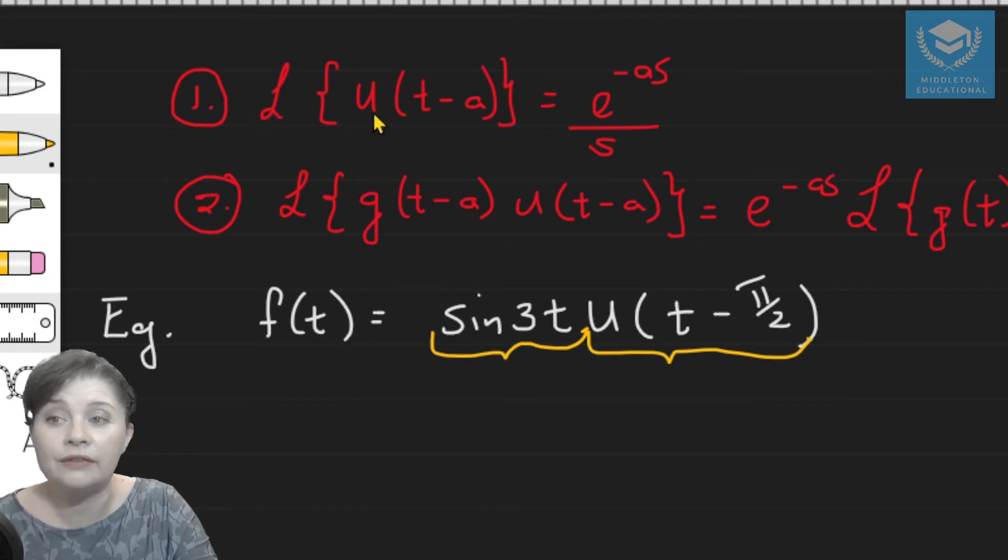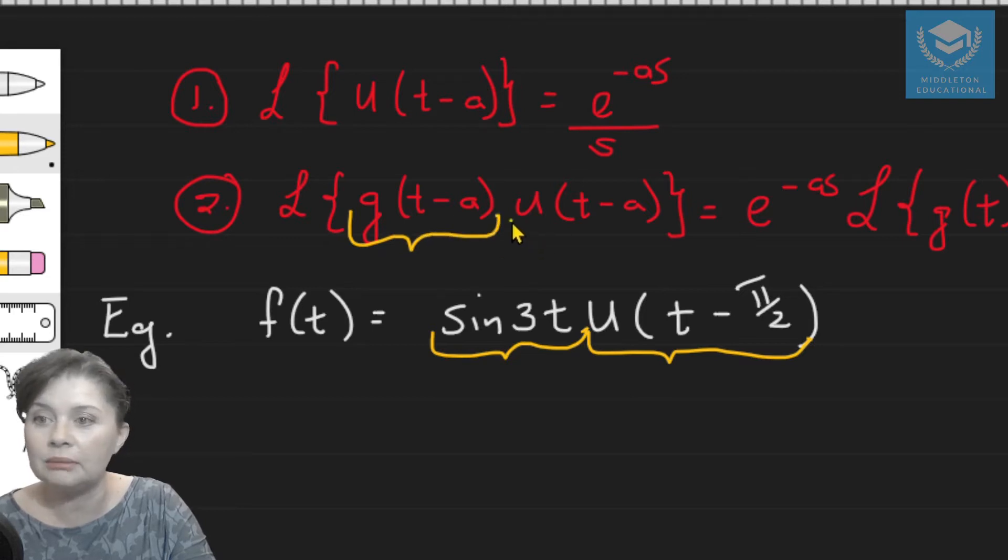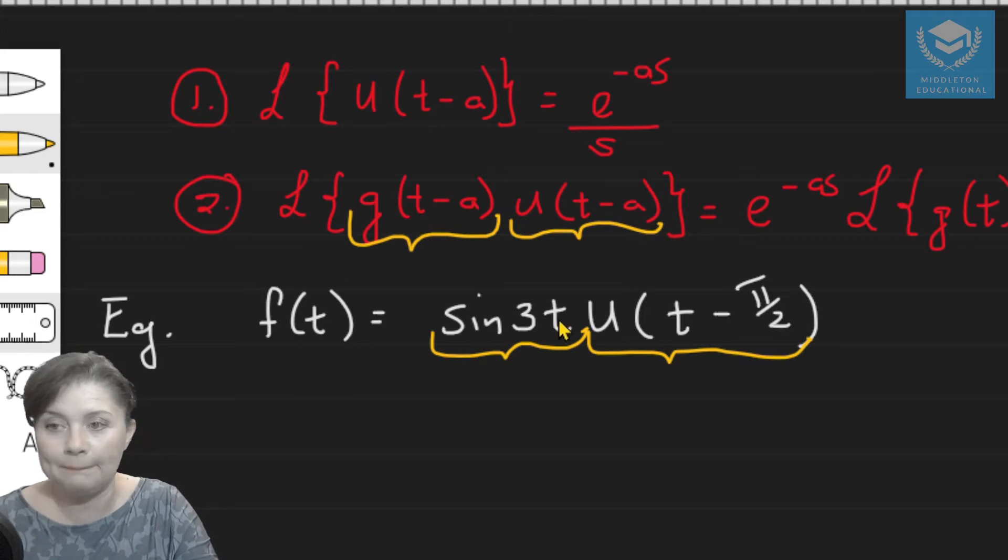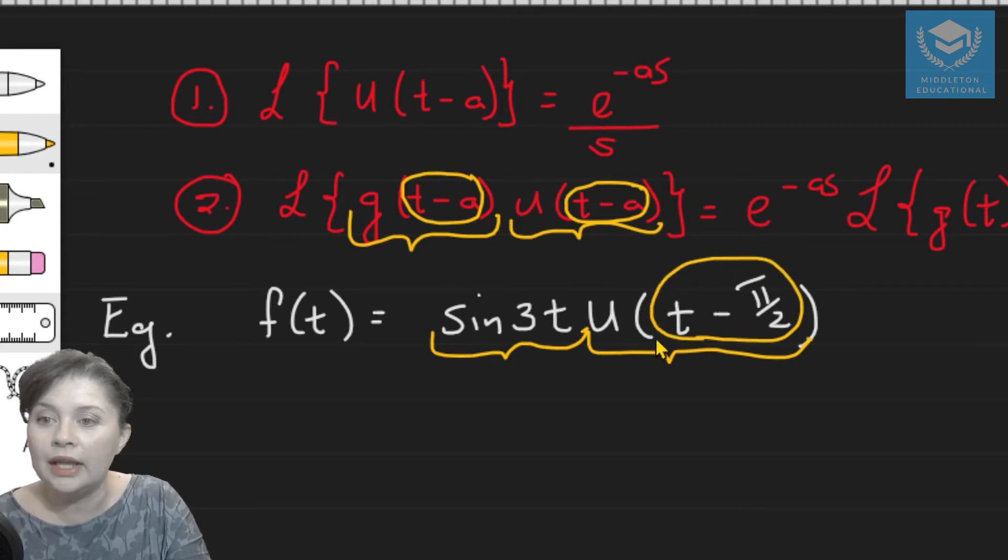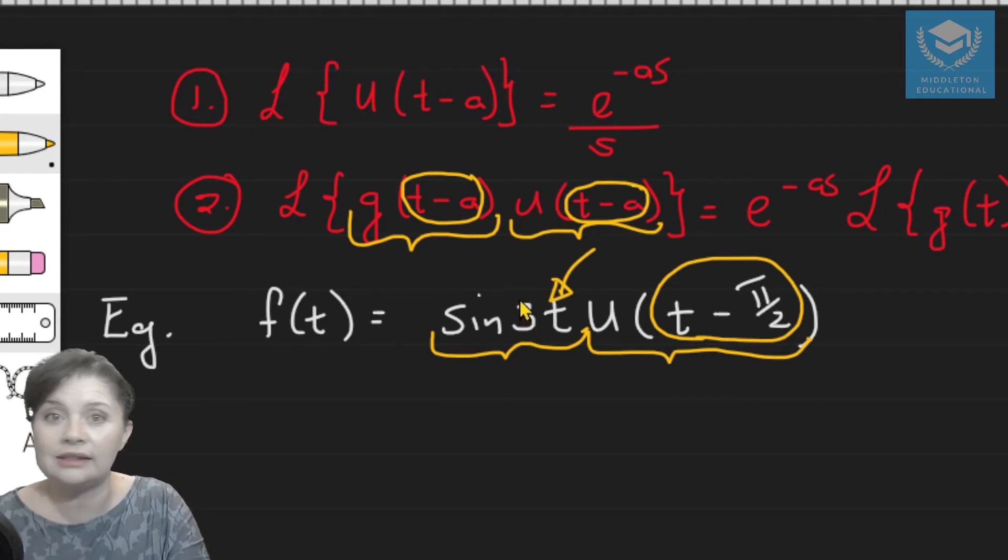That means you can't use the first shifting theorem because that only has the Heaviside step function in it. So you'd have to use the second one because that is in the same form, a function multiplied by the Heaviside step function. Now the next thing you have to look at is to see if it is in exactly the same form as that second shifting theorem. So do we have t minus a in the Heaviside step function and a matching t minus a in the function that is in front of that Heaviside function? So let's see what we've got. We have t minus pi over 2 and do we have t minus pi over 2 in the sine function? So it should be here somewhere. We don't have that, which means we can't apply the second shifting theorem immediately.